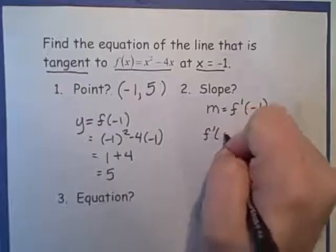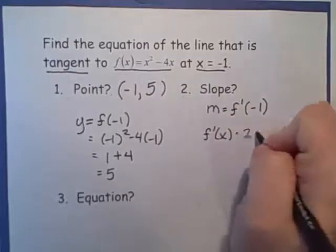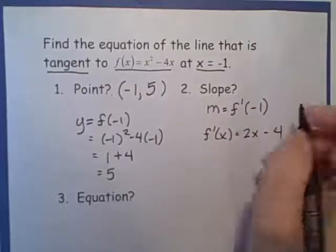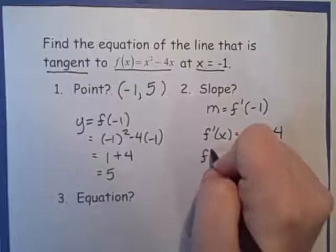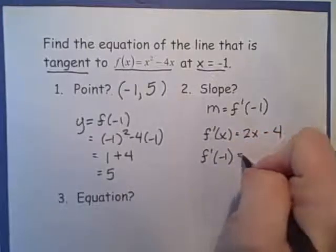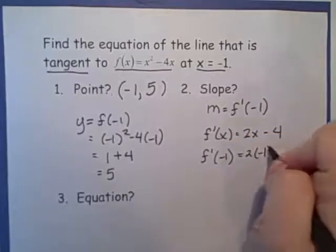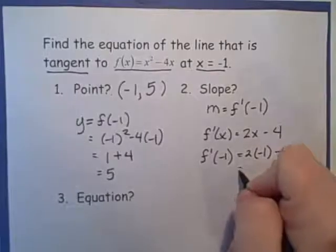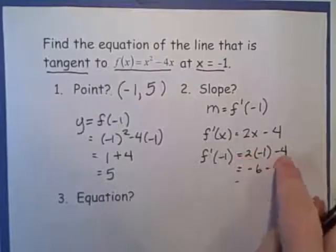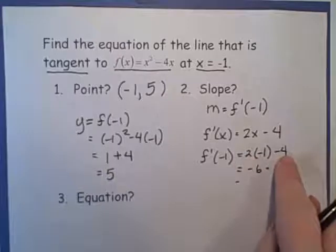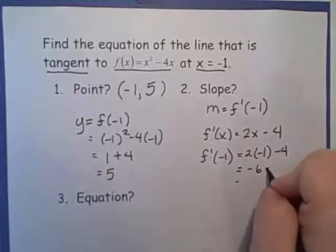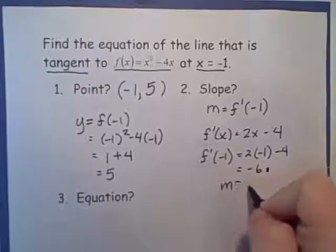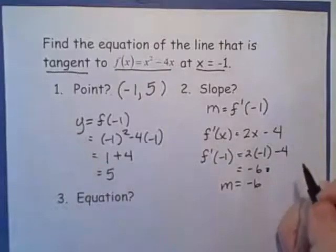f prime of x is equal to 2x minus 4. If I plug in negative 1, I have 2 times negative 1 minus 4. That's negative 2 minus 4, which is negative 6. So our slope is equal to negative 6.